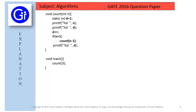In this question we are given a C program and we need to find its output. We start with the main function. Inside main there is a call to the user-defined count function with parameter value 3. We jump to that function which takes int n as a parameter, so the value of n is 3.